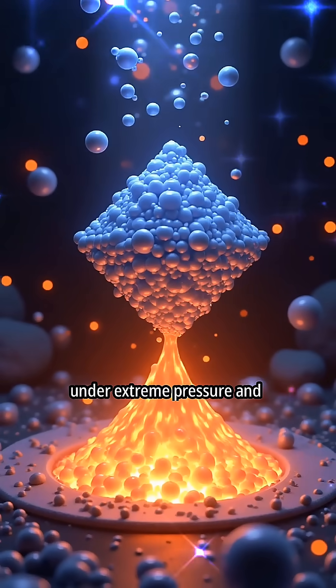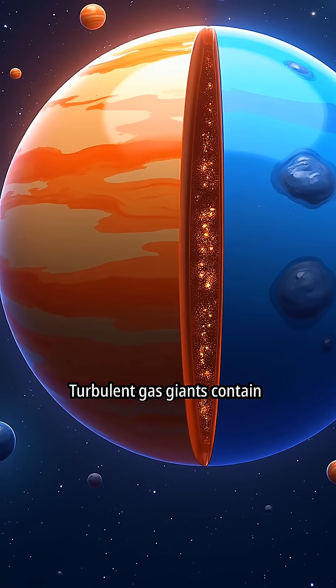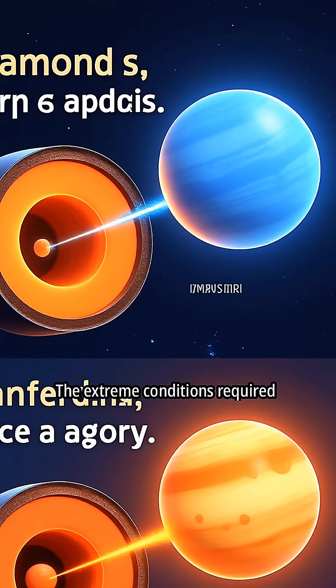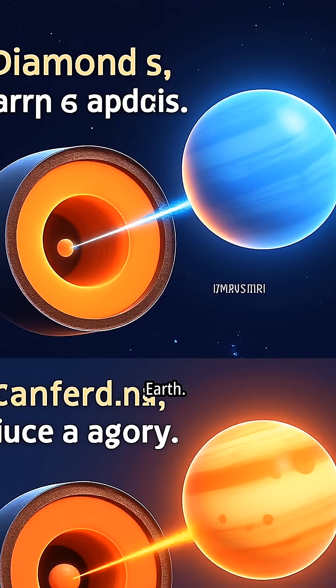Diamonds are formed from carbon under extreme pressure and temperature. Turbulent gas giants contain carbon compounds that can form diamonds under specific conditions. The extreme conditions required for diamond formation make them rare and valuable on Earth.